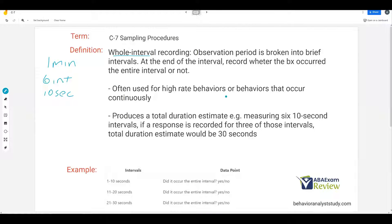Whole interval is often used for high rate behaviors or behaviors that occur continuously. So behaviors that might not have a clear beginning and end, or behaviors that happen at a really high rate where it's likely they could last the entire interval. Whole interval produces a total duration estimate. Let's say we have six 10-second intervals. If a response is recorded for three of those intervals, then our total duration estimate would be 30 seconds. Obviously, it's not always going to be that accurate, but with discontinuous measurements we're not expecting full-blown accuracy. It's more out of necessity or because we believe it's going to be good enough.